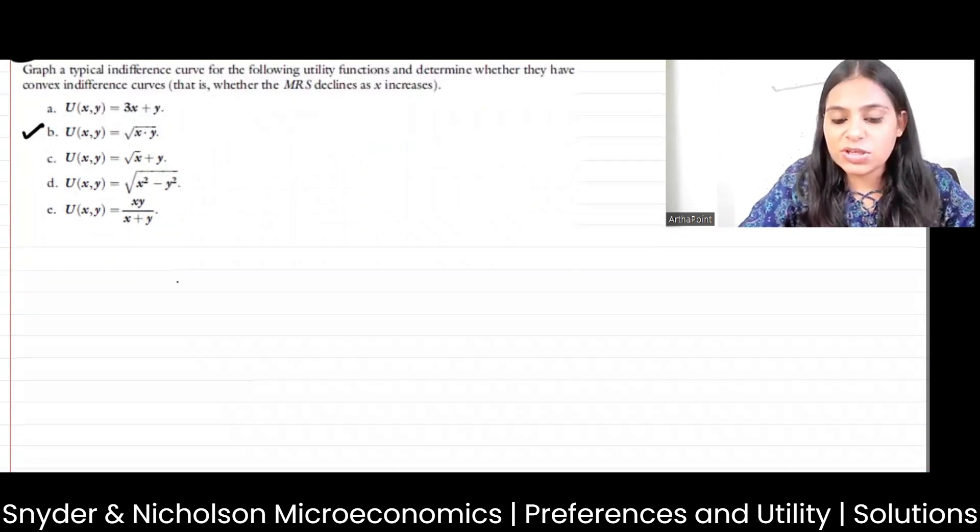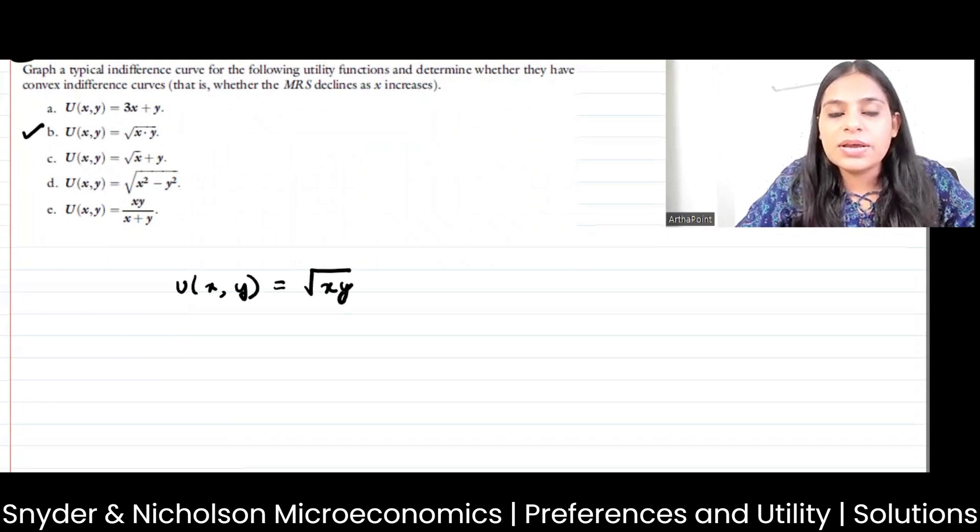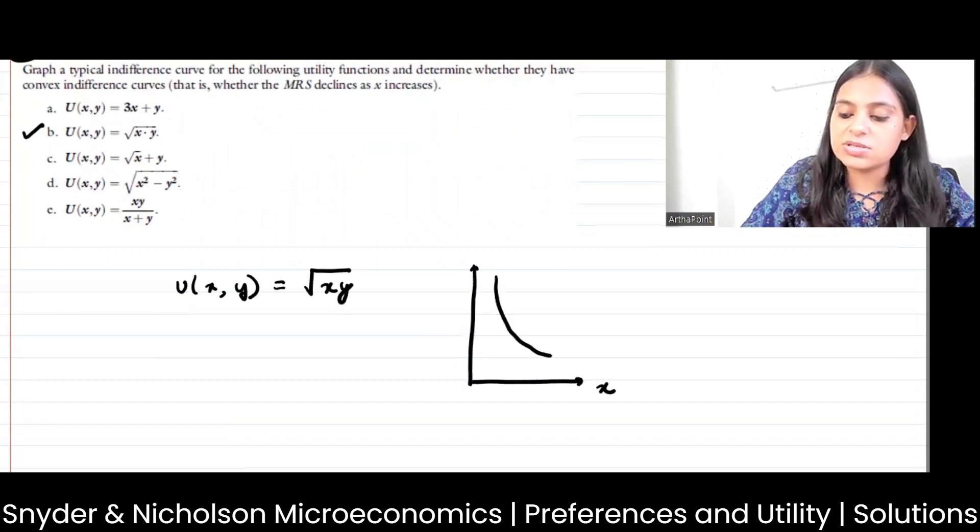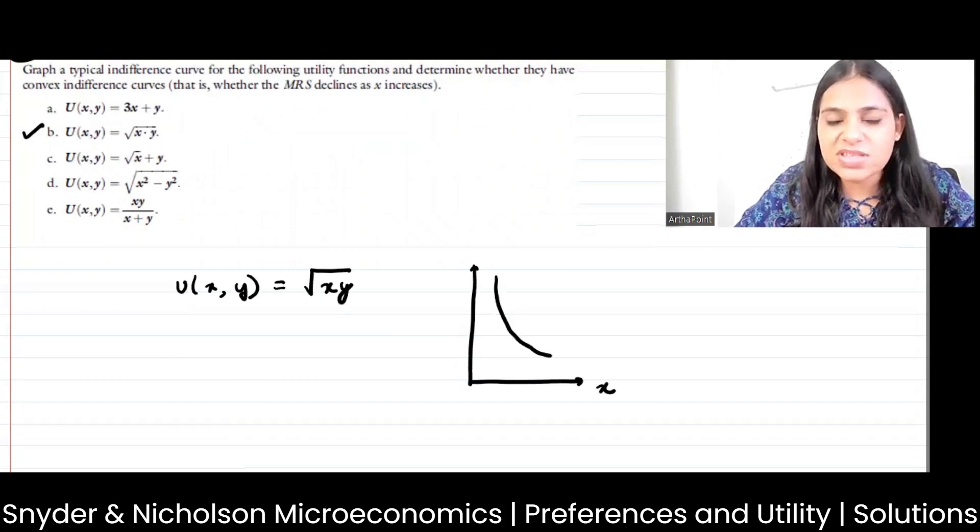So the utility function given to you is root xy. It will be convex if MRS diminishes as x increases. So basically as x increases the slope should decrease. Then it would be convex to the origin.